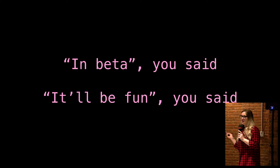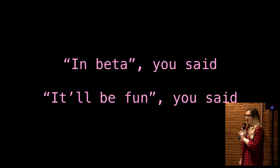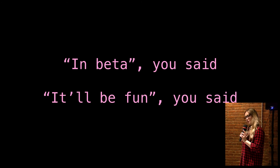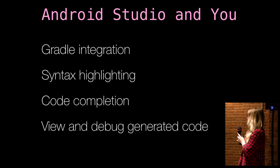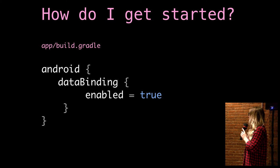The elephant in the room is that there has not been an official announcement that data binding is out of beta. However, I have it on good authority that now that data binding is included and builds with Gradle in the normal way with the rest of Android Studio, it is stable and it is safe. We have been using this at Genius in production for about eight months with no issues. And because the code is generated at compile time, you can be sure that what you test is what you ship. There's now Gradle integration, syntax highlighting, code completion, and you can view and debug all of the generated code. To get started, you add three lines to your build.gradle file and you can get going.